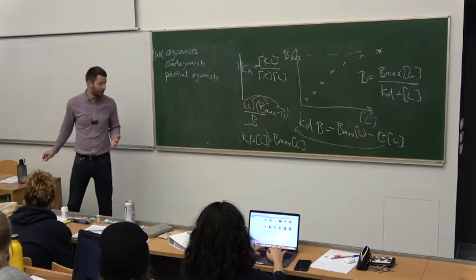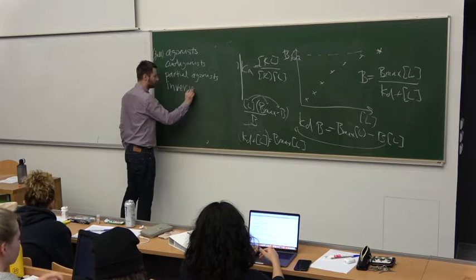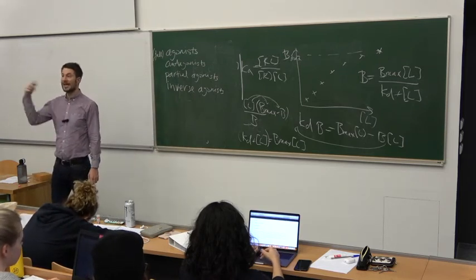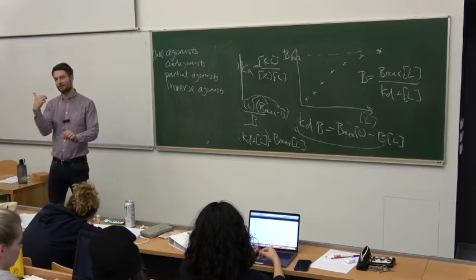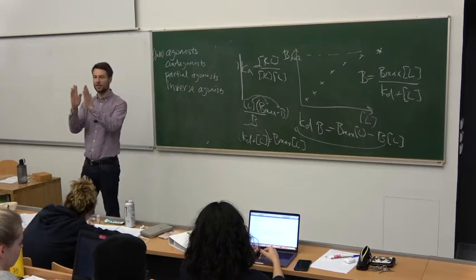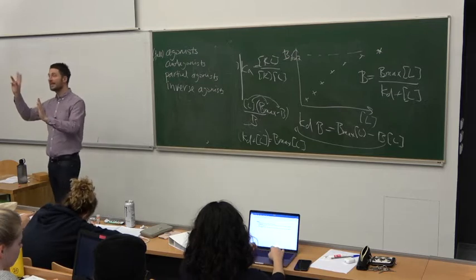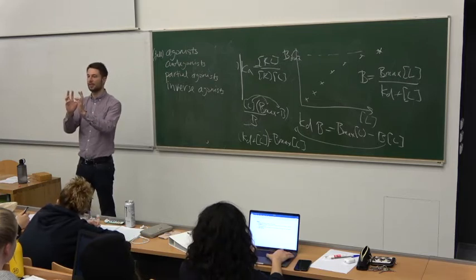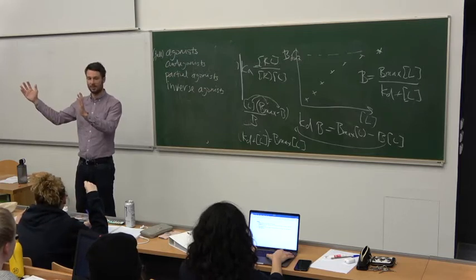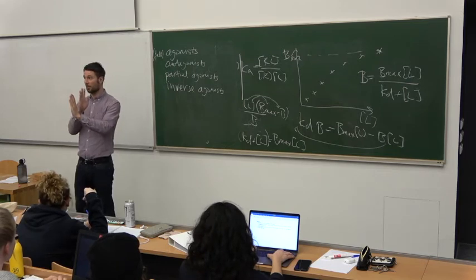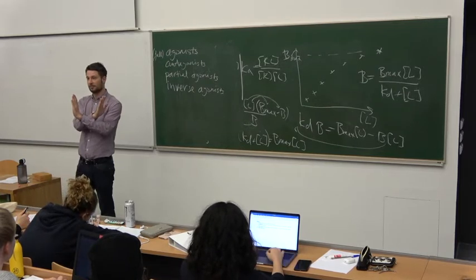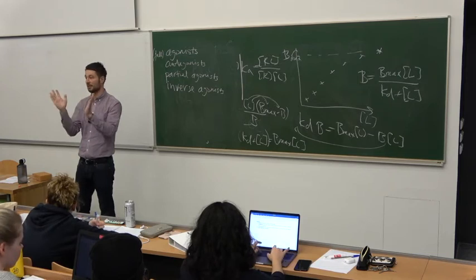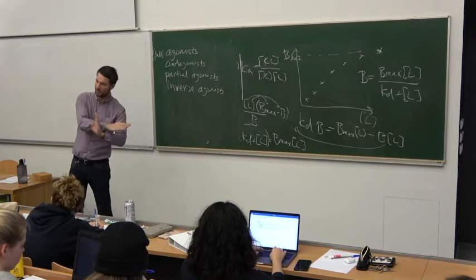The last category are inverse agonists. Inverse agonists produce the opposite effect to agonists. If we have an ion channel with a baseline probability of 10% being open without any ligand, when we bind a full agonist the probability rises to 99% open. When we add an inverse agonist, the probability drops to 1%. An antagonist just keeps it at 10% - it does nothing to the probability. An inverse agonist actually produces an opposite response.